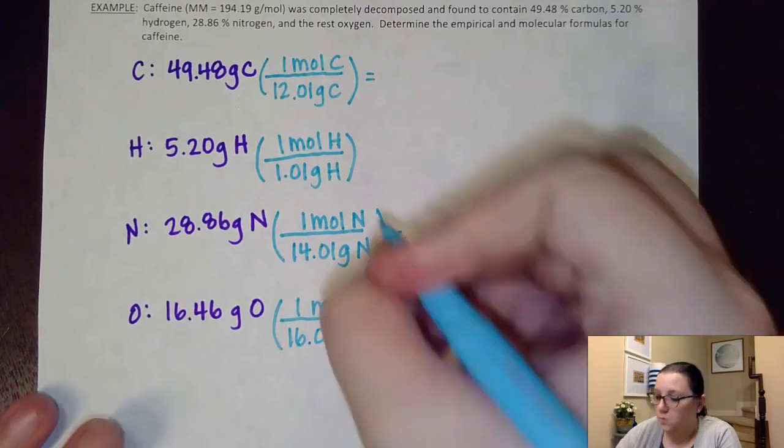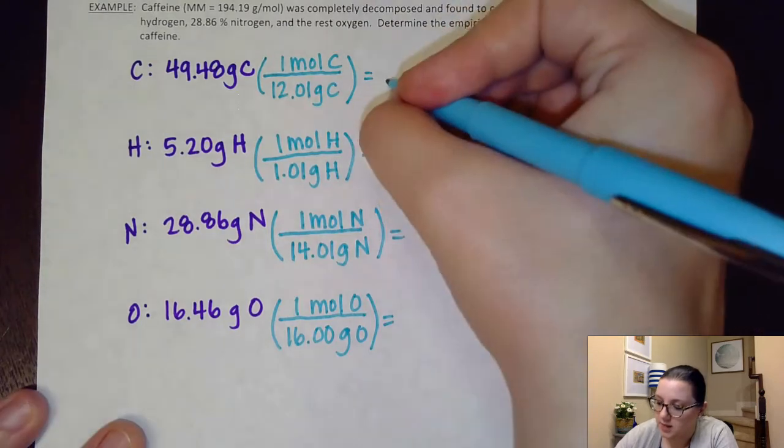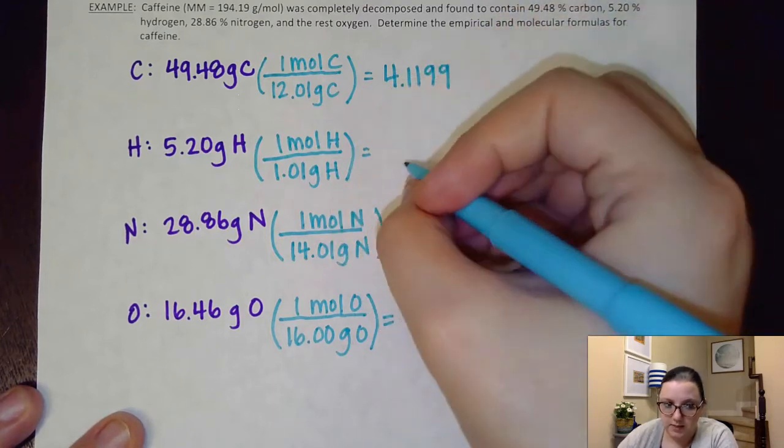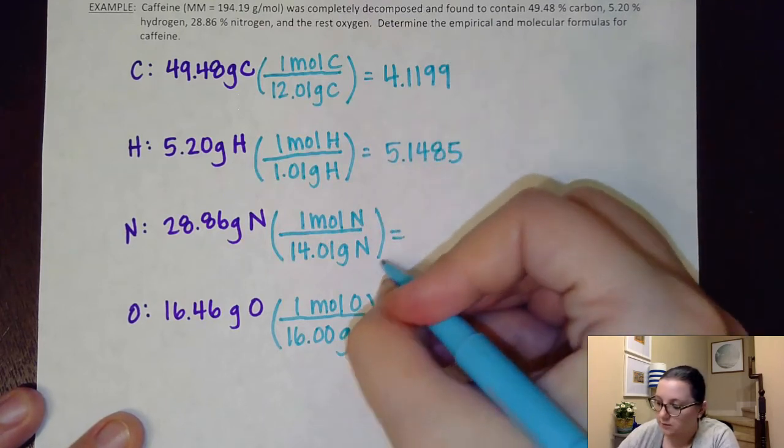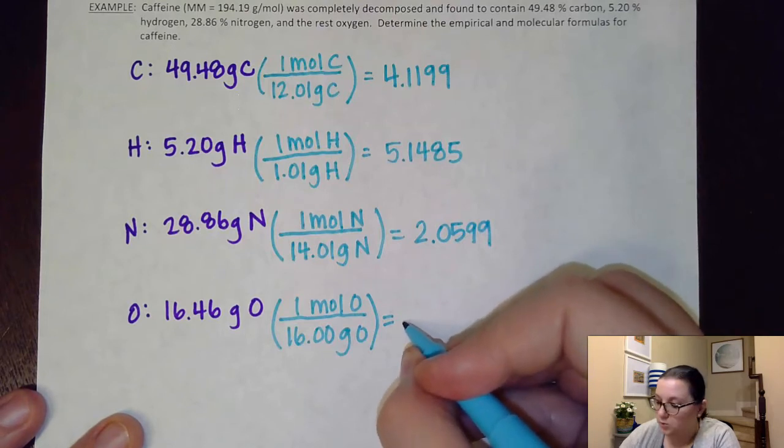All right. Now, when I do this next step here, I want to make sure that I am recording quite a few digits. I'm not done with my math yet. And if you truncate off these numbers too much, you're going to mess yourself up math-wise when you do the divide by smallest step. So just keep in mind, show at least four sig figs. Honestly, five, six, or seven doesn't hurt. It just gets kind of annoying to write that many numbers down. So I'm going to actually show five here for each of these. This first one comes out to be 4.1199. This one comes out to be 5.1485. The nitrogen comes out to be 2.0599. And then, last but not least, the oxygen comes out to be 1.0287.